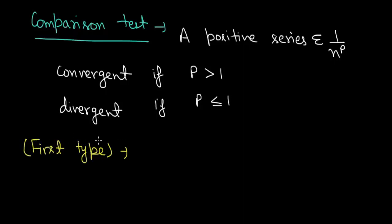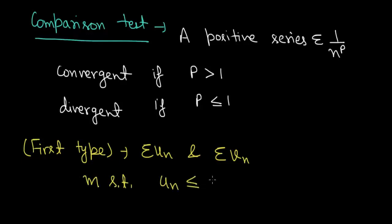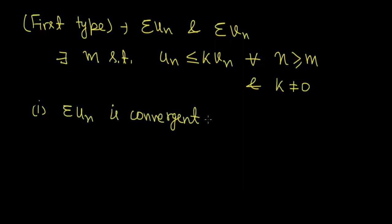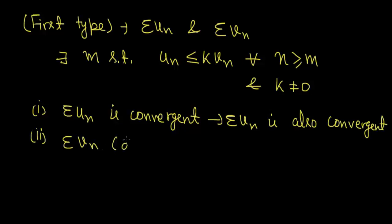In the comparison test of first type, we have two positive term series sigma uₙ and sigma vₙ. These two series are such that there exists a positive integer m such that uₙ ≤ k·vₙ for every n ≥ m, where k ≠ 0. Then if sigma vₙ is convergent, sigma uₙ is also convergent; and if sigma vₙ is divergent, sigma uₙ is also divergent.